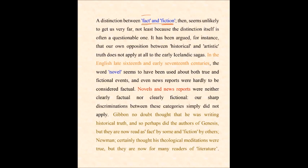Look how many aspects we have taken through a comparison between fact and fiction. This still seems unlikely to get us very far — we are still revolving around the point. The distinction itself is often a questionable one, under debate. It has been argued, for instance, that our own opposition between historical and artistic — sometimes when we speak about history and exclude it from being literature — and artistic truth doesn't apply at all to the early Icelandic sagas.